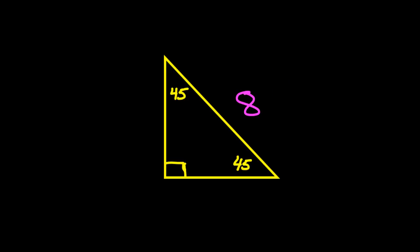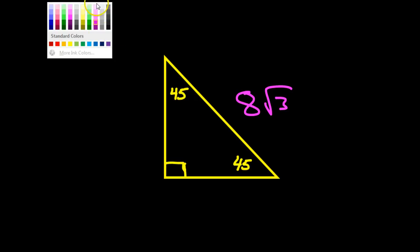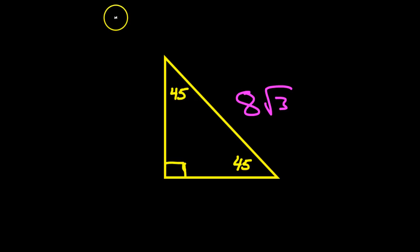They told us that the hypotenuse is eight radical three. Now, we're supposed to somehow take this and find out what the legs are. And so here's how you can do it. I'm going to move this over for a second. Let me put the pattern back.